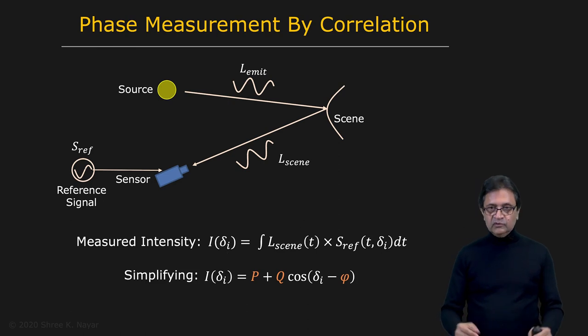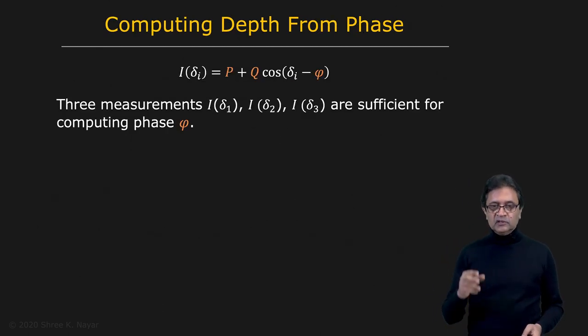When you work this out, you get a very simple expression: the measured intensity i for the phase δ_i is p + q·cos(δ_i - ψ), where ψ is the phase we're trying to measure. In this equation, you know δ_i because you picked it, you know the intensity i that you measured, but you have three unknowns: p, q, and ψ.